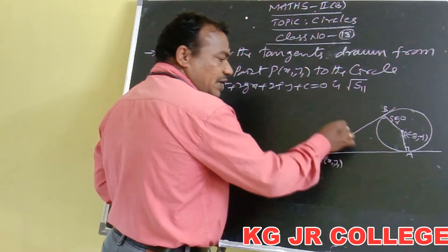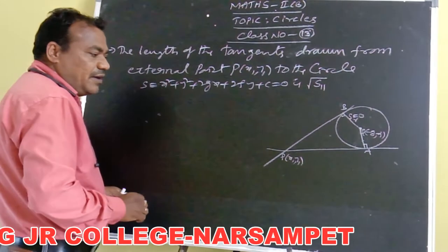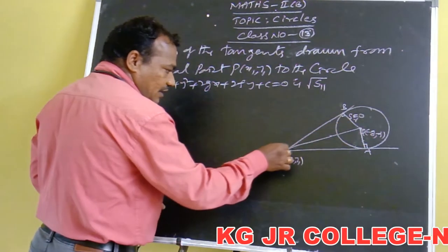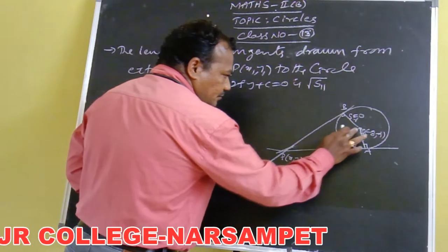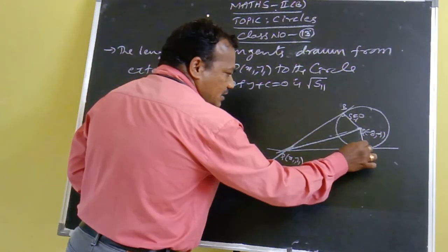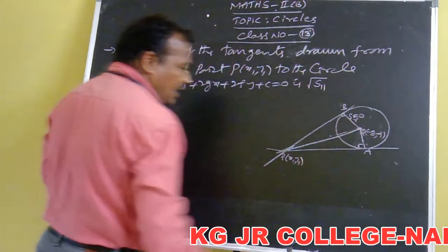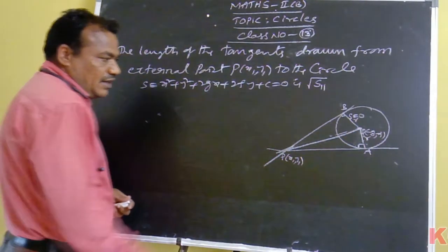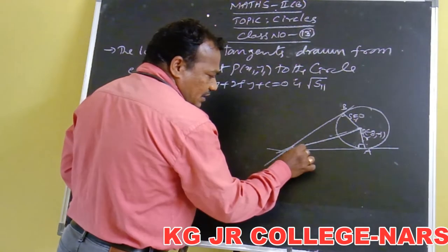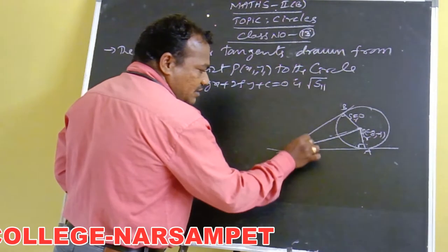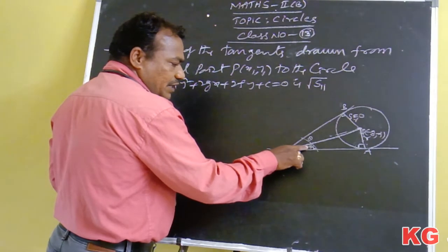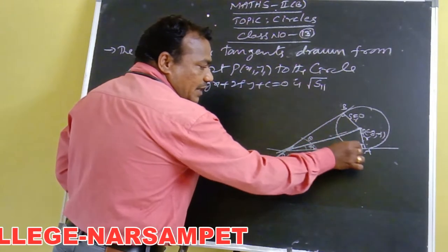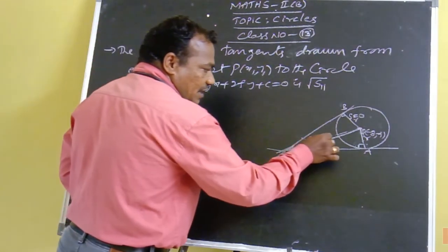We have to find PA or PB. We observe that there is a right angle at vertex A in triangle PAQ, which is a right angle at A. QA is equal to the radius of the circle. The hypotenuse is PQ. The angle between the two tangents is θ, so the half angle is θ/2. The opposite side of the right angle is the hypotenuse.